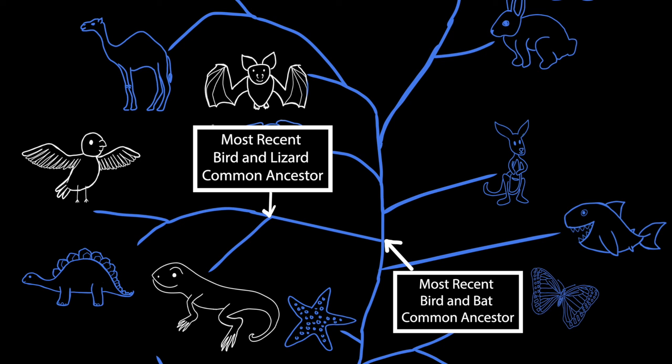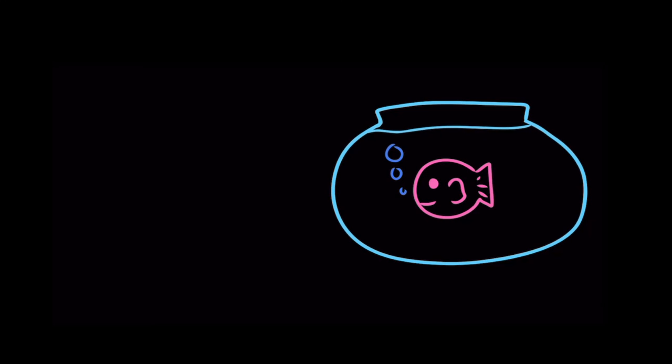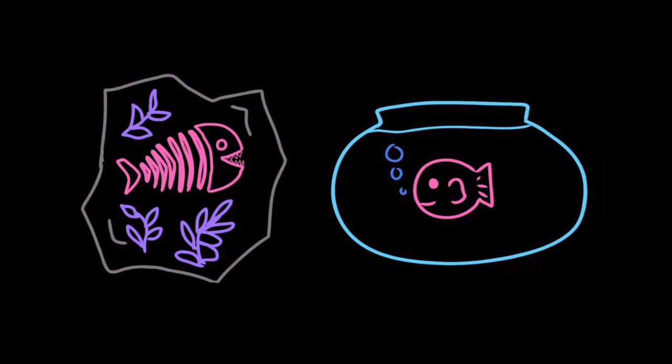When scientists believe they have found species with homologous features, they can use other methods to find out more about how the species evolved over time. They can compare the anatomical features of modern organisms to those found in fossils to see how much they have in common.